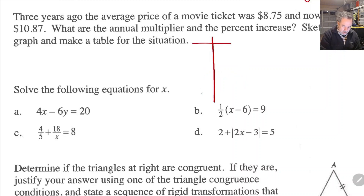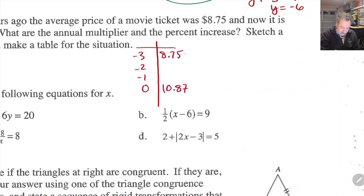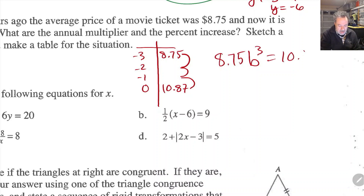Writing this table down really helps because I can see I'm going to multiply by my multiplier once, twice, three times — from negative 3 to negative 2, negative 2 to negative 1, and negative 1 to 0. So I've got $8.75 times B times B times B — B to the third — equals $10.87.